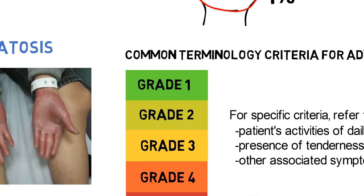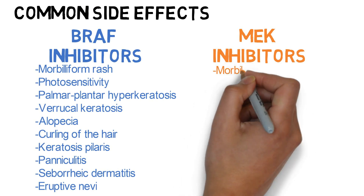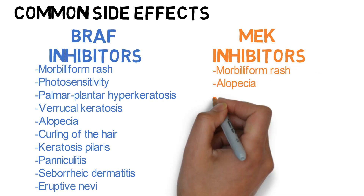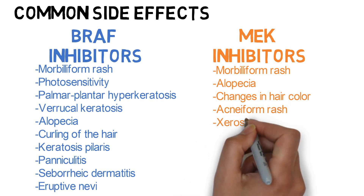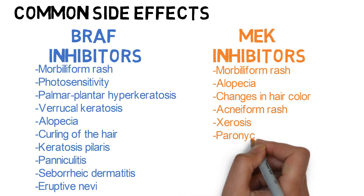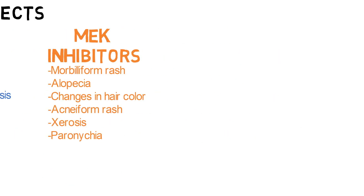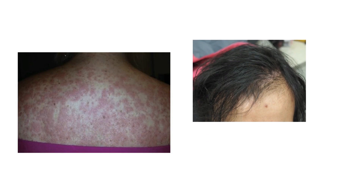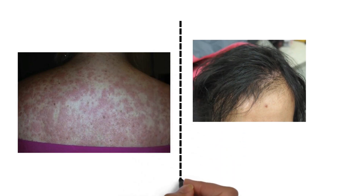Now let's move on to MEK inhibitors. For MEK inhibitors, common side effects include morbilliform rash, alopecia, changes in hair color, acneiform rash, xerosis, and paronychia. Morbilliform rash and alopecia are both side effects of BRAF and MEK inhibitor therapy, and their treatments have been previously reviewed. Other changes to the hair seen with MEK inhibitors include changes in hair color.